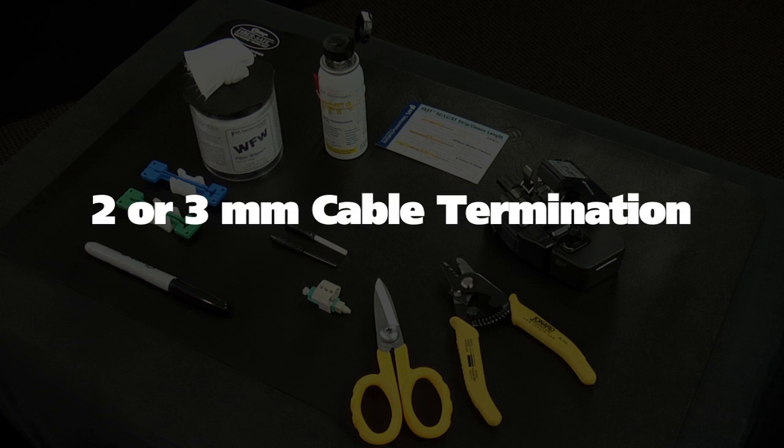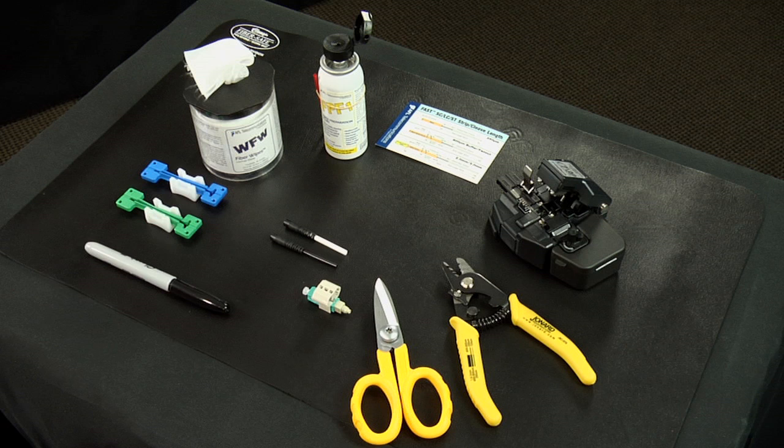Two or three-millimeter cable termination. The components and tools required for installation are: Fast SC connector assembly, a two-millimeter boot, a three-millimeter boot, a two-millimeter cable clamp, a three-millimeter cable clamp, a fiber stripper, a CT30A cleaver, fiber prep fluid, lint-free cloth wipes, a marker pen, Kevlar scissors, and a strip template.